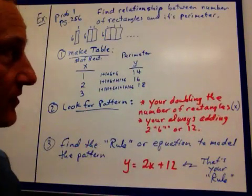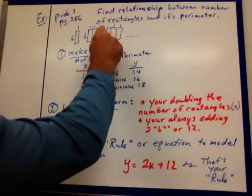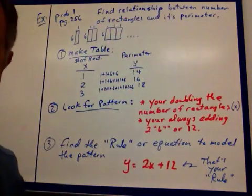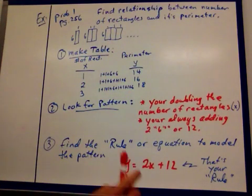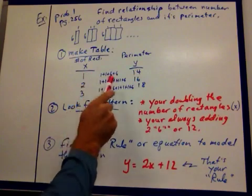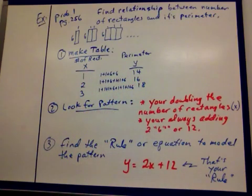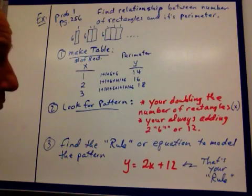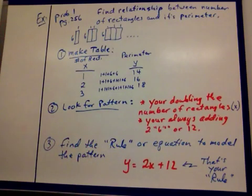Remember, perimeter is the sum of the sides. You don't add the insides there. We're just adding the perimeter of that, the outside. So we're getting a pattern here. 1 to 14, 2 to 16, 3 to 18. I'm noticing I'm going up by 2. That's one pattern I notice. So we start looking for patterns here.